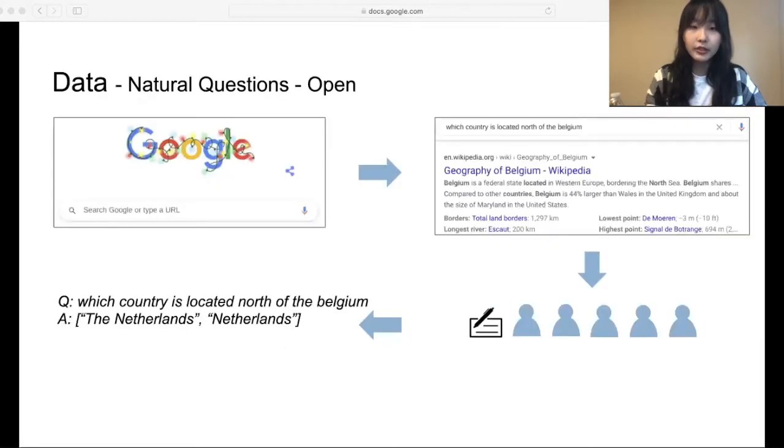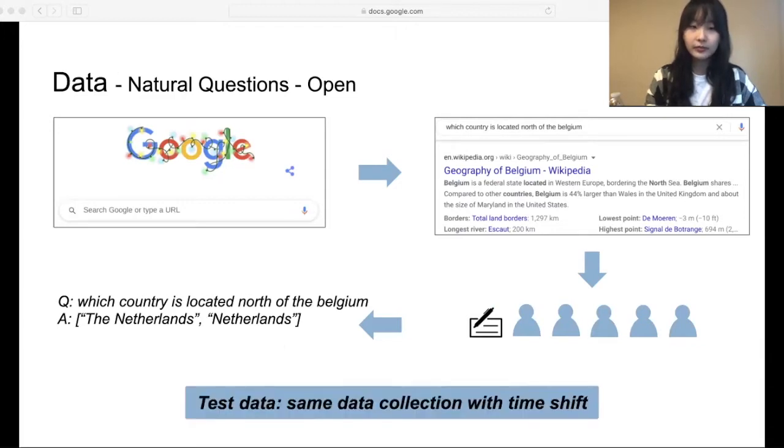For data, we use natural questions open, one of the benchmarks in academic QA research. The questions are derived from Google search queries. Each question is paired with a Wikipedia article, and then given to five annotators so that they can annotate the answer. The question and answer pairs with short answers are taken as the final data. For the test data, we collected the data with substantial time gap from the training data. This gives an extra challenge of generalizability.